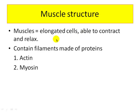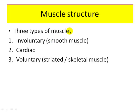Muscles are basically elongated cells that are able to contract and relax. They contain what are called filaments made of two particular types of proteins: actin and myosin. There are three types of muscle. First, involuntary muscle — this is the smooth muscle, which you have no control over. Second, the cardiac muscle around the heart. And third — the one we're focusing on for muscle growth and bodybuilding — the voluntary, striated or skeletal muscle.